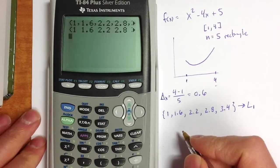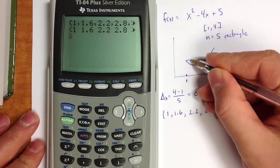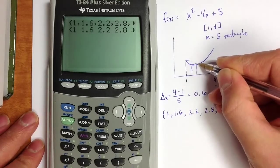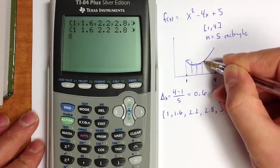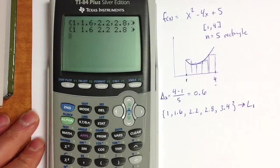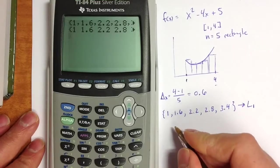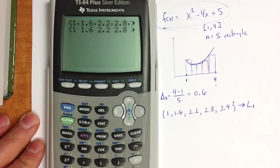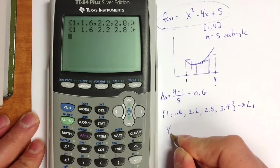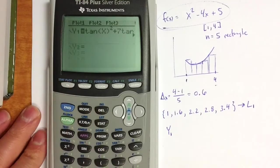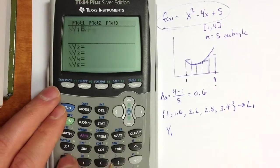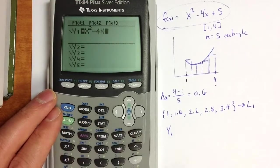The second thing to do, I want to build my rectangles by taking the height of each rectangle to be the function value at the left endpoint for simplicity. There are other ways, of course, you could find the height of these rectangles, but we'll take the left endpoint method. So I want to apply the function to the list. We can define y1 to be that function. So I'm going to define y1 to be x squared minus 4x plus 5.